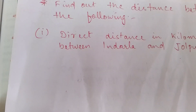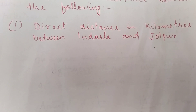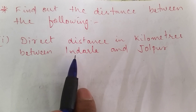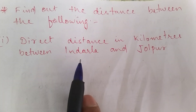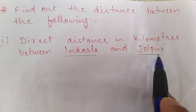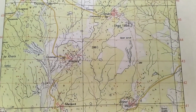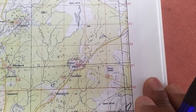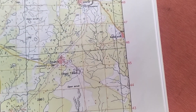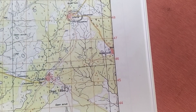Let's take an example of how to find the distance on the topographical map. The first question is: find the direct distance in kilometers between Inderla and Jholpur. Inderla is a village and Jholpur is another village. We have to find the distance between these two villages on the toposheet.